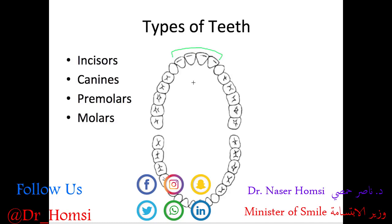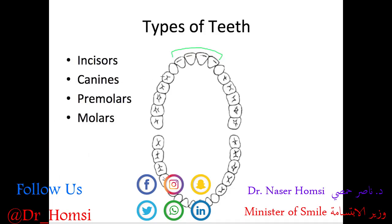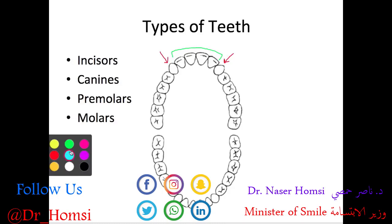The canines refer to the teeth right next door to the incisors. The canines are important for tearing and holding food, and also important for aesthetics. Both the incisors and canines together are referred to as the anterior teeth because they're in the front and are the most visible of all our teeth.